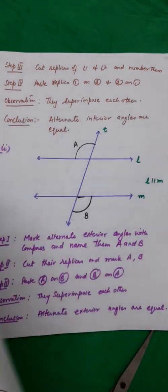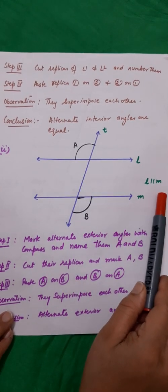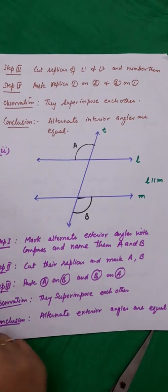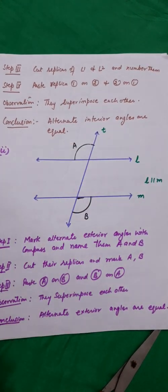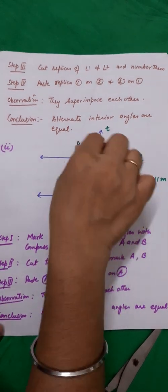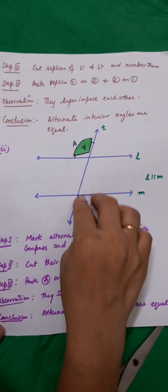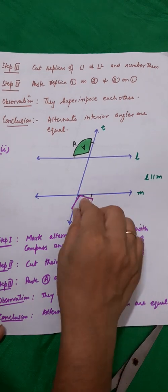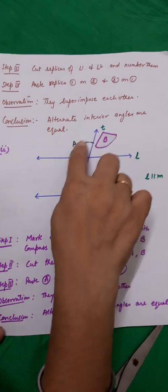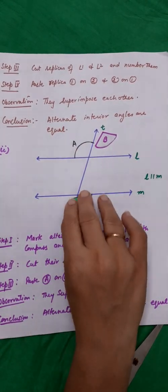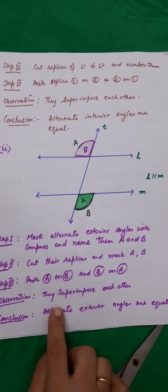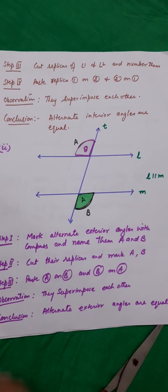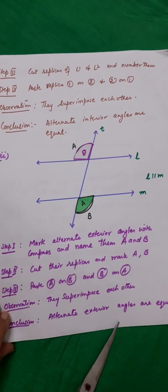Next is alternate exterior angles are equal. Again we repeat the steps: draw 2 lines L parallel to M and a transversal T. With the help of the compass, mark the alternate exterior angles and label them A and B. Cut their replicas. Paste A on B and B on A, interchanging their positions. A fits on B and B fits on A. We notice that they superimpose each other. Hence we can say that alternate exterior angles are equal.